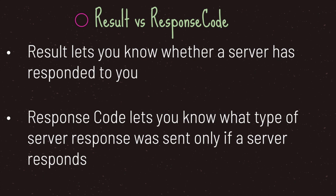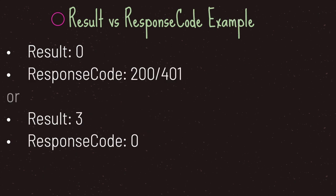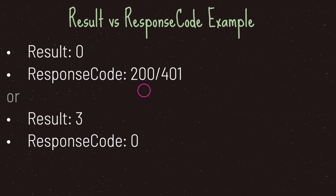The result enumeration lets you know whether a server has responded back to you. This is different from a response code, because a response code lets you know what type of server response was sent. We can see that the request completed signal gives us a result value and a response code value. We can still get a result enumeration integer value of zero even if the server responds back with a 401 status code — because result only cares if a server has responded back. The response code cares what type of response is sent back by the server. So even if we successfully retrieved information or were denied access, our result will still be zero.